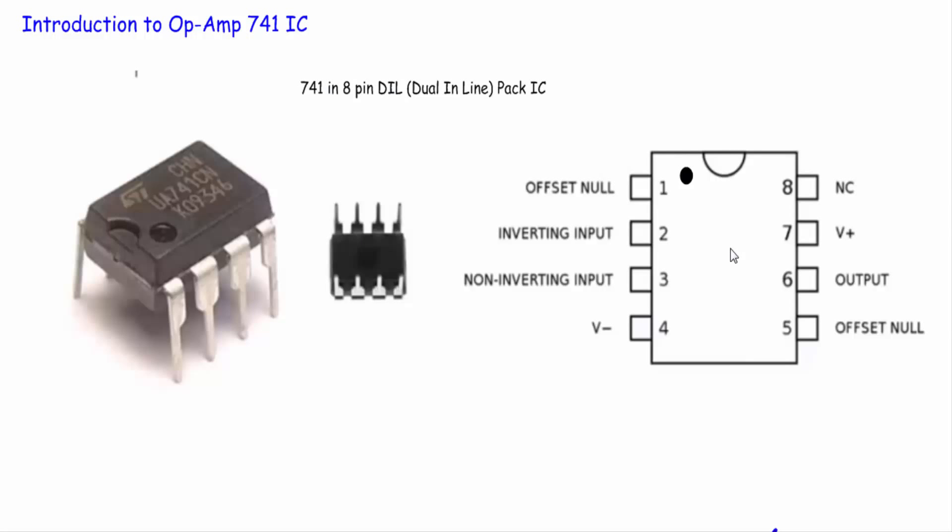In this video, I will introduce you to operational amplifier ICs and will show you the equivalent circuit of an operational amplifier and its ideal characteristics. LM741 and LM324 ICs are the most widely used ICs in operational amplifier applications.